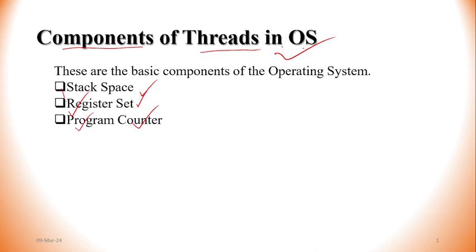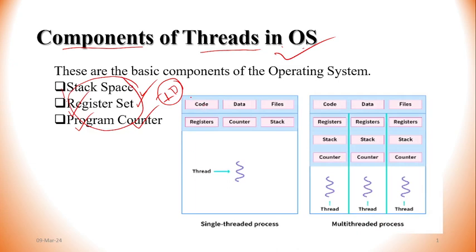Threads may also have a thread ID. Here is the main component — the processor has code, data, and files. Here is the single-threaded processor.